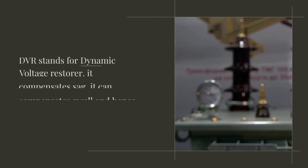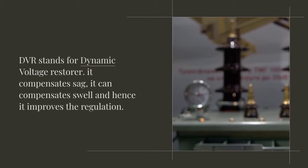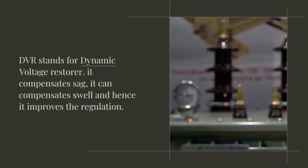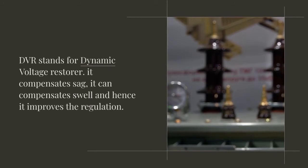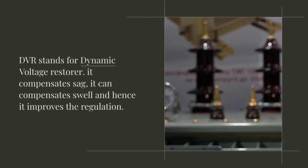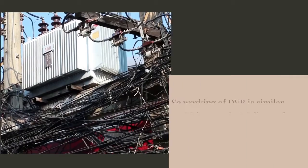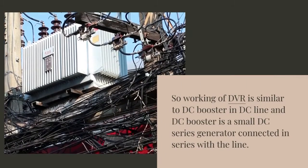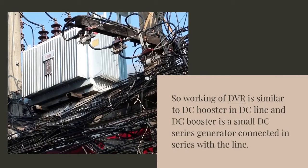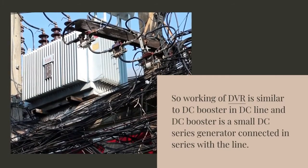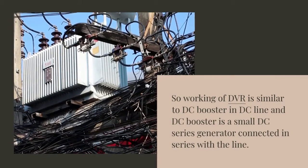DVR stands for Dynamic Voltage Restorer. The functions: it compensates sag, it can compensate swell and hence it improves the regulation. So working of DVR is similar to DC booster in DC line and DC booster is a small DC series generator connected in series with the line.